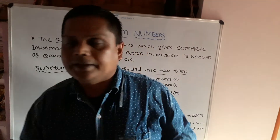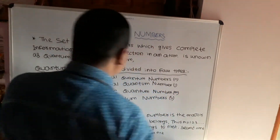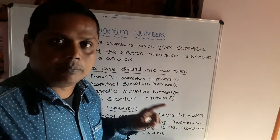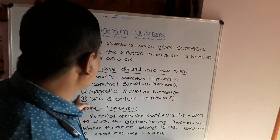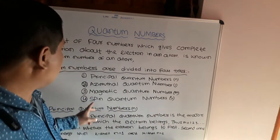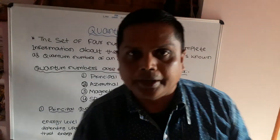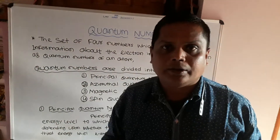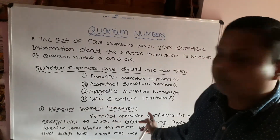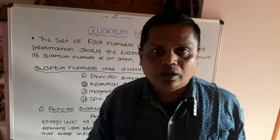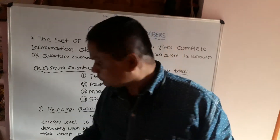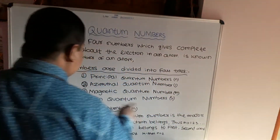Quantum numbers are divided into four types. The first one is the principal quantum number, n. The second one is the azimuthal quantum number. The third one is the magnetic quantum number, m. The fourth one is the spin quantum number, s.